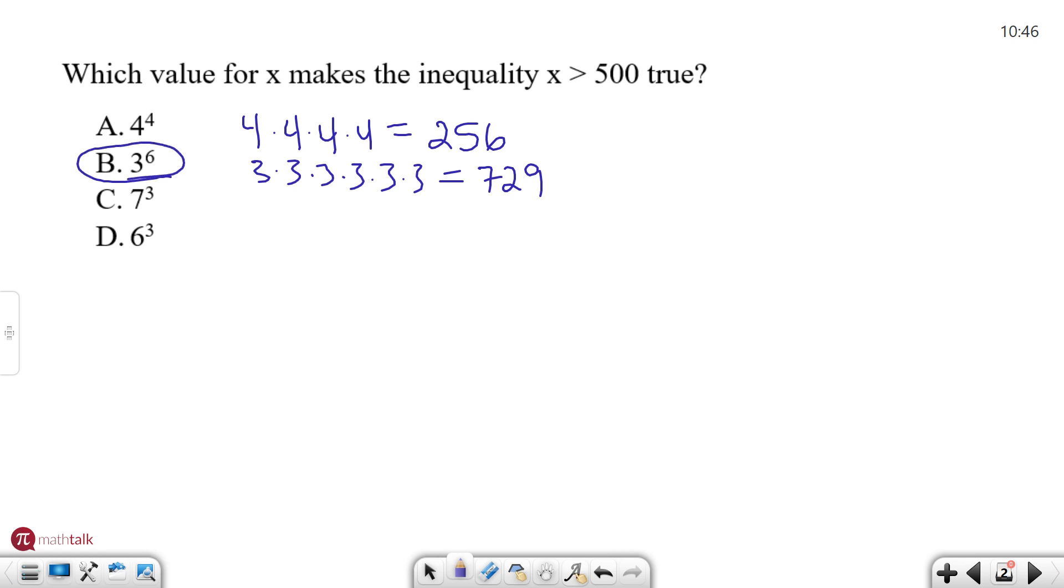If you were to try option C and option D, 7³ is actually 343, 7 × 7 × 7, and 6³ is 216, 6 × 6 × 6. And both of those are less than 500, so it's still going to be B. Alright, so that's a simple example.